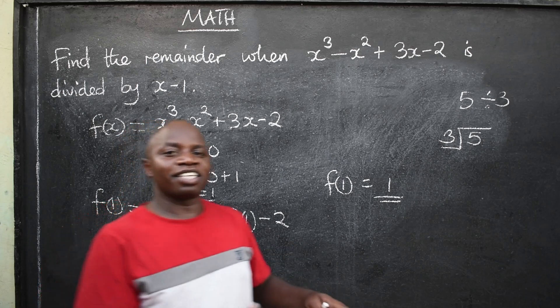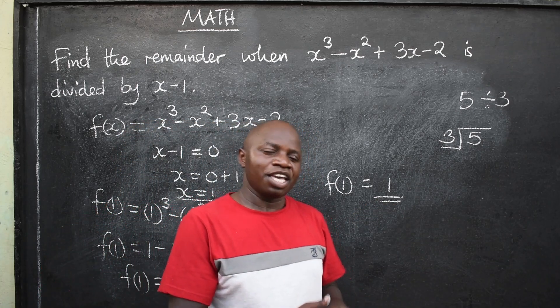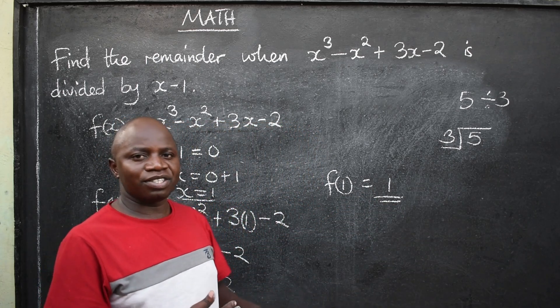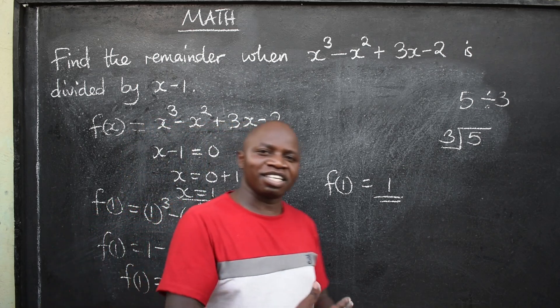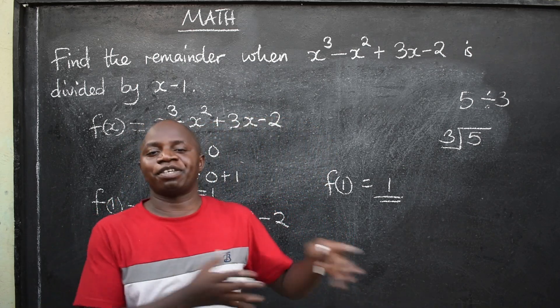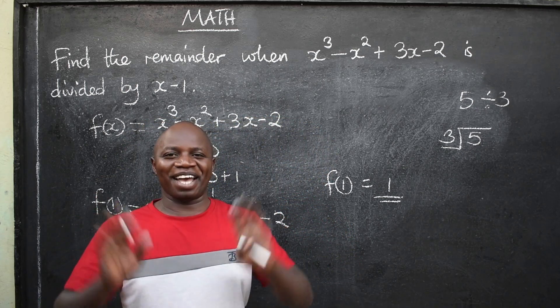Under factor theorem, if the remainder is 0, then whatever you are dividing is a factor of that polynomial. Bye-bye.